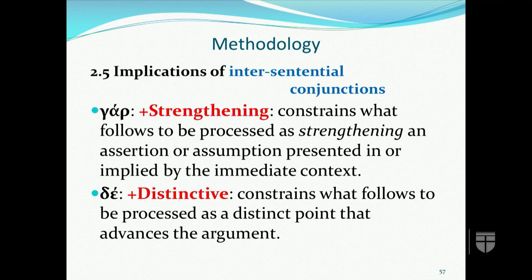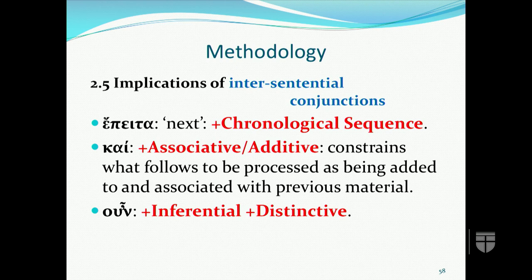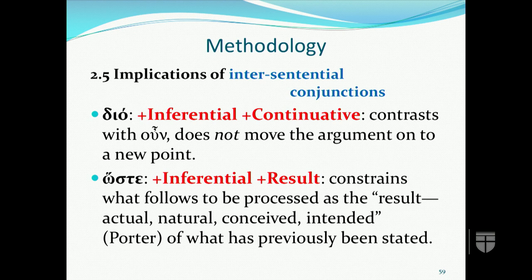'De' — plus distinctive — constrains what follows to be processed as a distinct point that advances the argument of the letter. 'Eita' or 'epita' marks chronological sequence. 'Kai' — plus associative or additive — constrains the material introduced to be processed as being added to or associated with previous material. 'Oun' — plus inferential plus distinctive — as mentioned earlier. 'Ara' — plus inferential plus continuative — contrasts with 'oun' in that it does not move the argument to a new point but maintains the same inferential constraint. 'Hoste' — plus inferential plus result — constrains what follows to be processed as the result of what was previously stated.